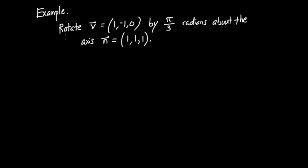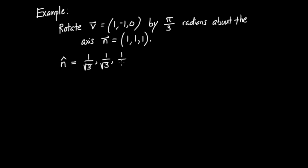We're going to rotate the vector V = (1, -1, 0) by pi over 3 radians, or 60 degrees, about the axis n = (1, 1, 1). I claim we can solve this problem with what we've just discovered because V is perpendicular to n — the dot product between V and n gives 0. Another thing to take care of: n = (1,1,1) has length square root of 3, which is not equal to 1. So I'm going to convert n to the corresponding unit normal by dividing all components by the square root of 3.